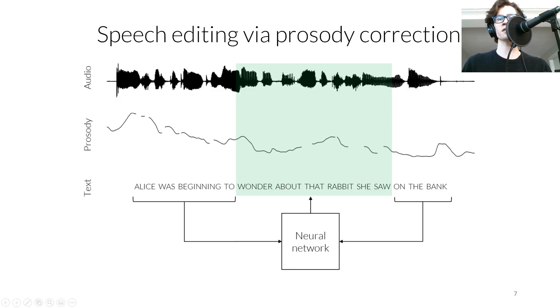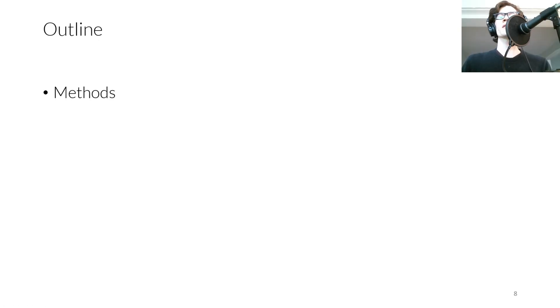Our work proposes to correct this naively copy-pasted example by using a neural network to infer a new prosody from the context speech. And ideally, we get something that sounds like this example that was re-recorded by a human. Alice was beginning to wonder about that rabbit she saw on the bank.